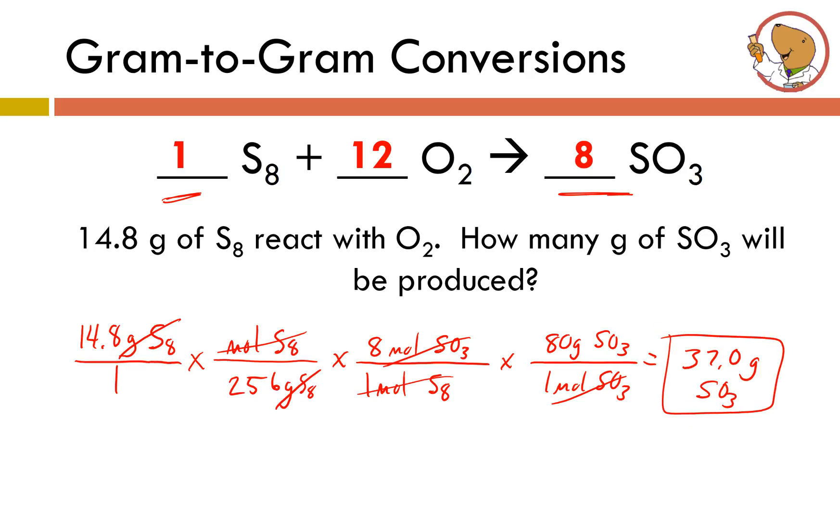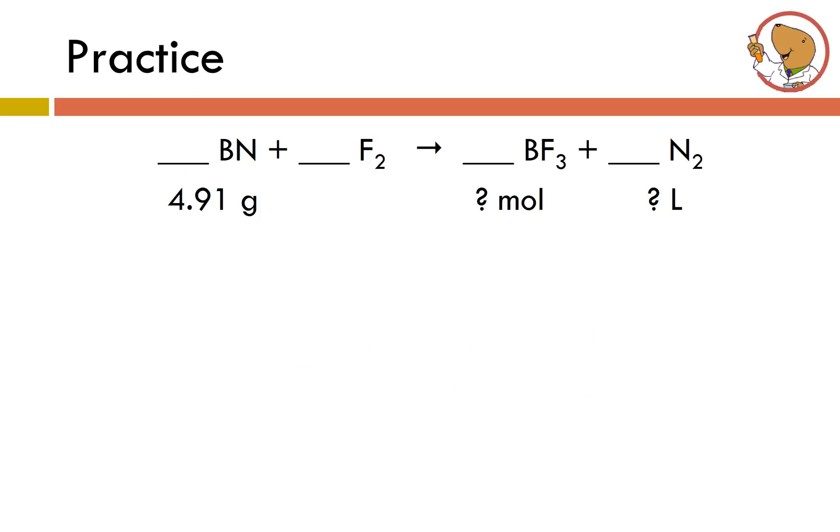Just like with other dimensional analysis problems that we've talked about so far, you really want to work step by step. Take the number that you've been given along with its units and work stepwise to get to the units that you need. And when we're talking about any sort of stoichiometric problem, you're going to have to go back to the balanced chemical equation at one point or another and use the ratio of moles to help you out. Let's do another practice problem. I've got a single replacement reaction between boron mononitride and fluorine to produce boron trifluoride and nitrogen gas. So the first thing I need to do is get this equation balanced.